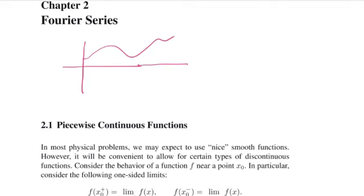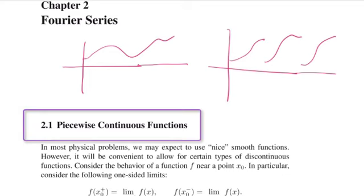But as it turns out, in the study of PDEs, we also need to allow jumps. So we need to allow functions which maybe have a little jump from here to there, and from here to there, and from here to there. And these functions we call piecewise continuous.